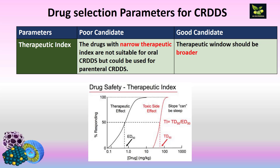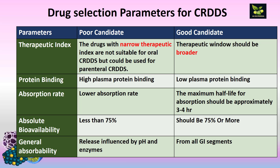A very important parameter is therapeutic index, which relates to the potency of the drug. Drugs with a narrow therapeutic index are not suitable for oral controlled release systems, but can be used for parenteral ones. The therapeutic window should be broader. The therapeutic index is calculated as TD50/ED50, and it shows the safety of the drug — safety is a very important parameter to consider.